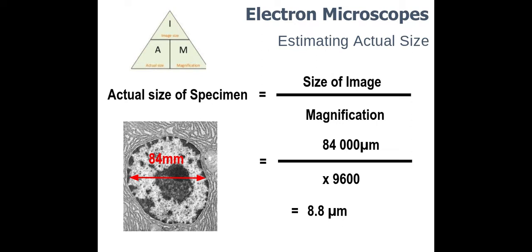So in this particular case I've got 84,000 micrometers which has been converted from 84 millimeters over my 9,600, and this would be provided in the exam as my magnification, which gives me 8.8 micrometers. So quite a nice easy one to start off with.